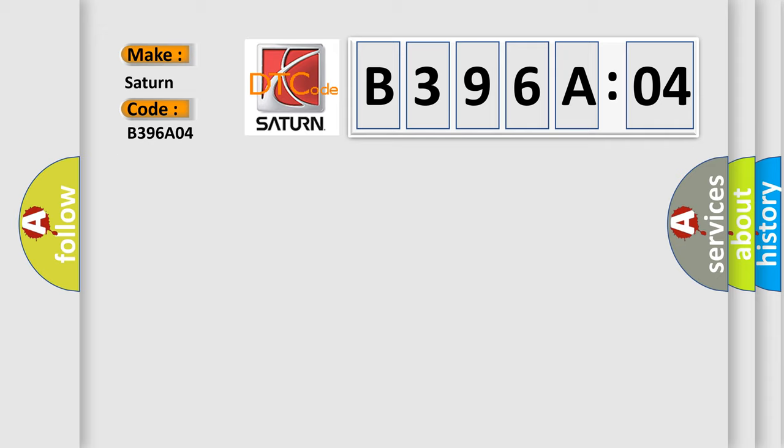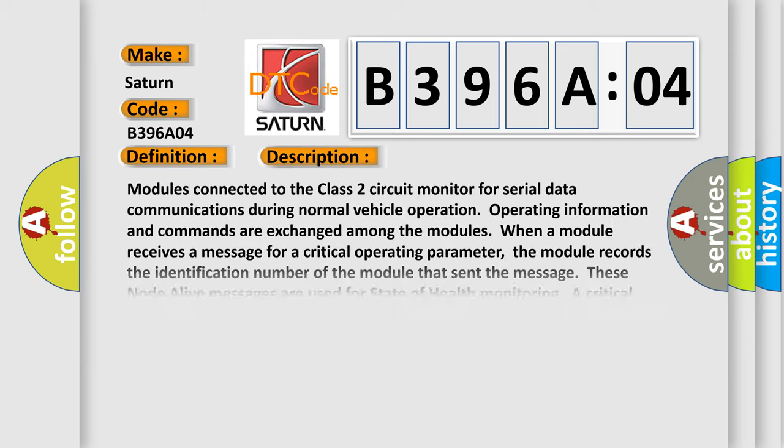The basic definition is Class 2 communication malfunction. And now this is a short description of this DTC code.